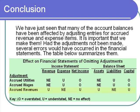For the last adjusting entry — accrued revenues — if the revenue was not recorded, revenues on the income statement would be understated, expenses would not be affected, but net income would be understated. On the balance sheet, if we did not record the accounts receivable with our customer, assets would be understated, liabilities would not be affected, but because net income was understated, the ending owner's equity — the capital account balance — would also be understated.